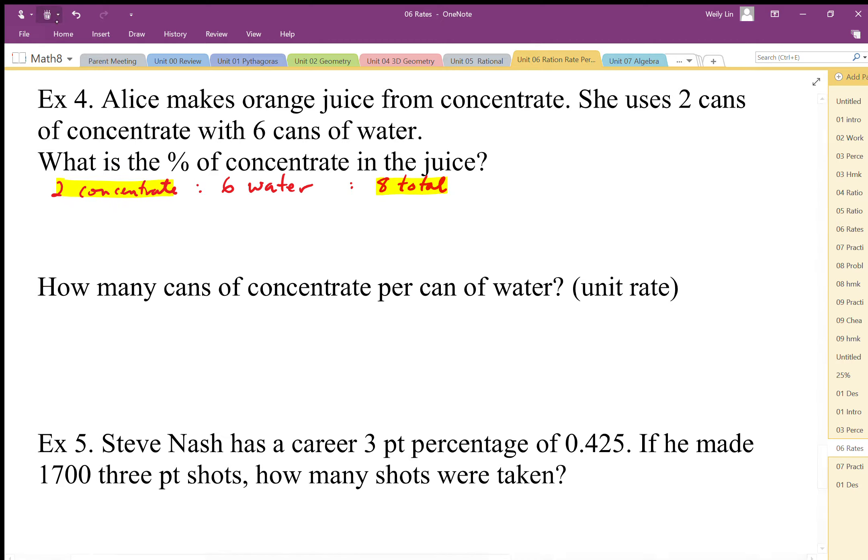I'm going to do two cans to eight cans total, which gives me a ratio of one to four. Because I want a percentage, I'm going to divide, which gives me a decimal of 0.25 cans concentrate to one can total.